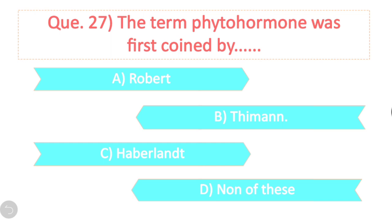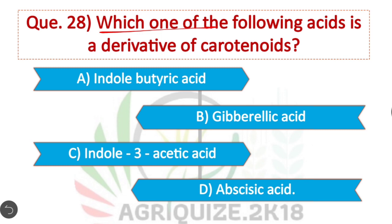Question 28: Which of the following acids is a derivative of carotenoids? Option D is correct. Abscisic acid is a derivative of carotenoids.